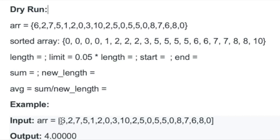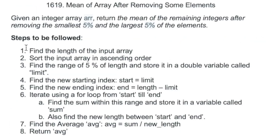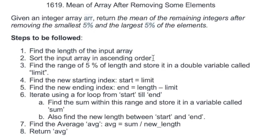The function return type is double, so we have to return a double value. The function name is trimMean and the parameter is an integer array arr. Let's take a look at the example and see how this can be solved using a Java program. We need to display the mean after removing the smallest five percent and the largest five percent of the elements. First let's take a look at the steps we need to follow.